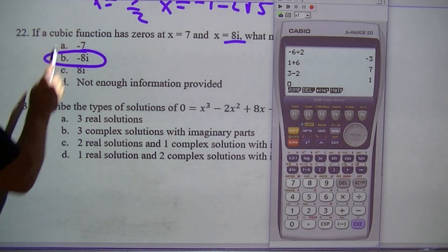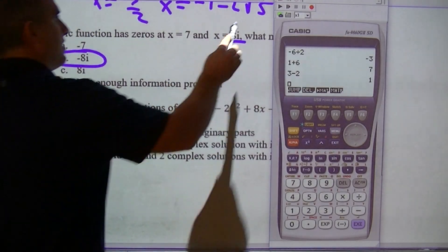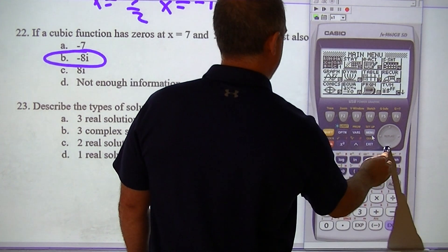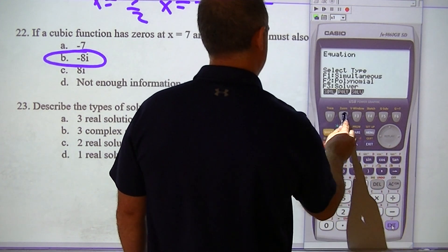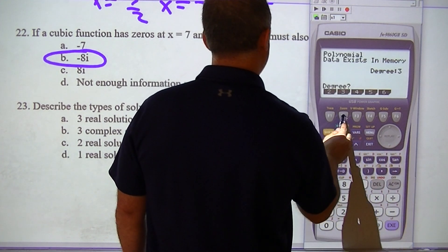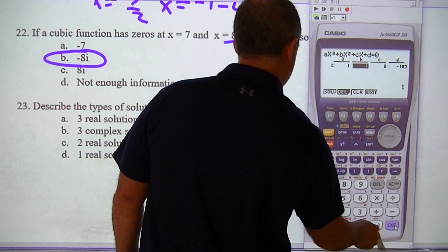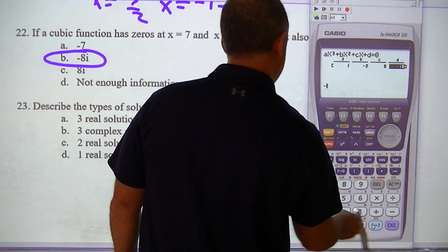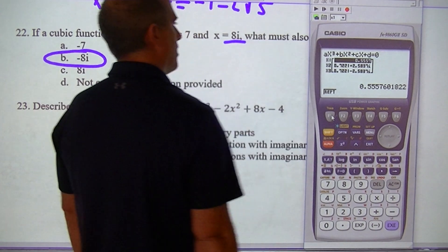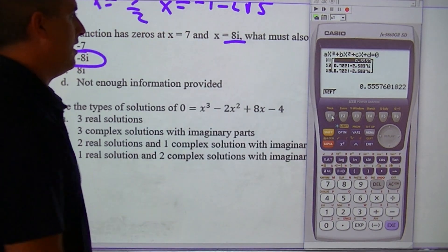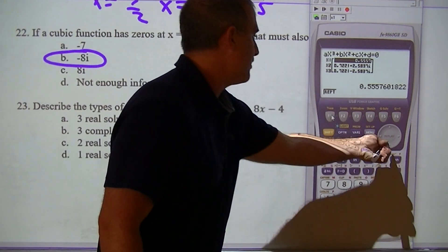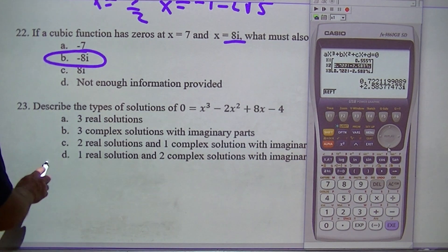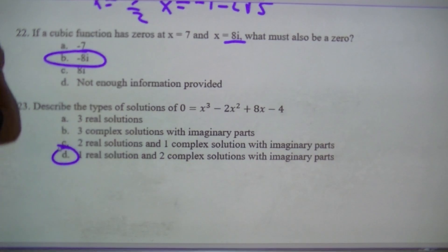Describe the nature of the roots — that's pretty easy. Go to Equa: type in 1, negative 2, 8, negative 4. I have 1 real root and 2 i's. So that's 2 imaginary roots. Answer: 1 real, 2 imaginary.